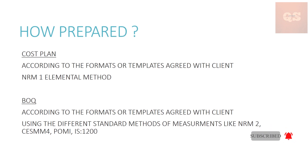Now, how are both these prepared? There might be some formats or templates already existing in the company or provided by the client, and based on that they can be prepared. Alternatively, there are international standard methods of measurement. For example, NRM1 is used to prepare a cost plan using the elemental method — I have explained this in the cost plan video. For BOQ, different standard methods of measurement are available, such as NRM2, SMM4, POMI, and for Indian projects IS 1200.